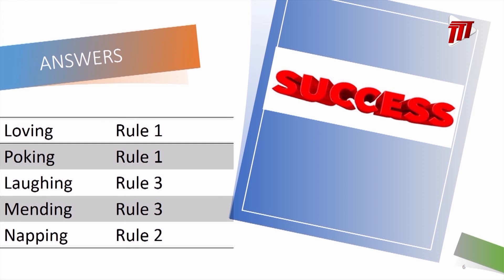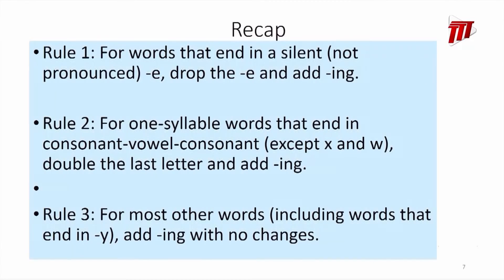Congrats! I am sure that you would have gotten all the words correct today. As we conclude, let's recap what we learned today. We looked at adding ING to words to spell them correctly. We saw three rules. Rule 1: for words that end in a silent E, we drop the E and add ING. Rule 2: for one-syllable words that end in the pattern consonant-vowel-consonant, except where the word ends in X or W, we double the last letter and then add ING. And finally, for most other words, including words that end in Y, we simply add ING and make no changes to the words.